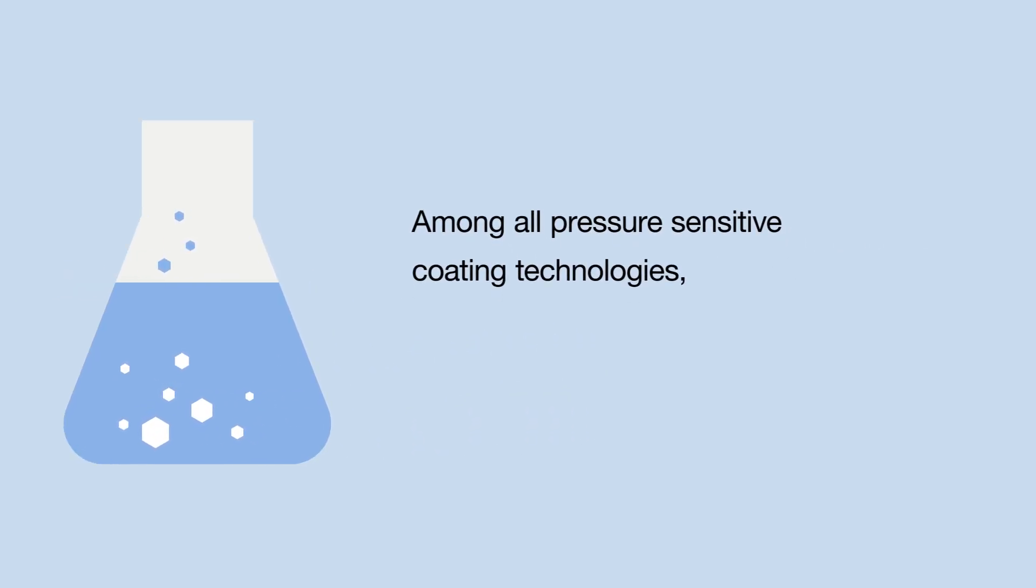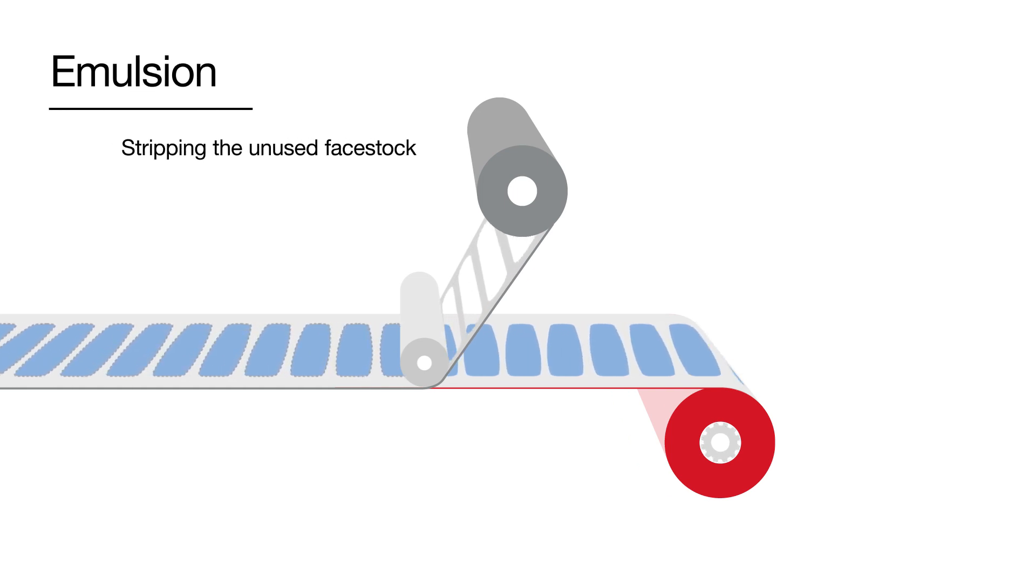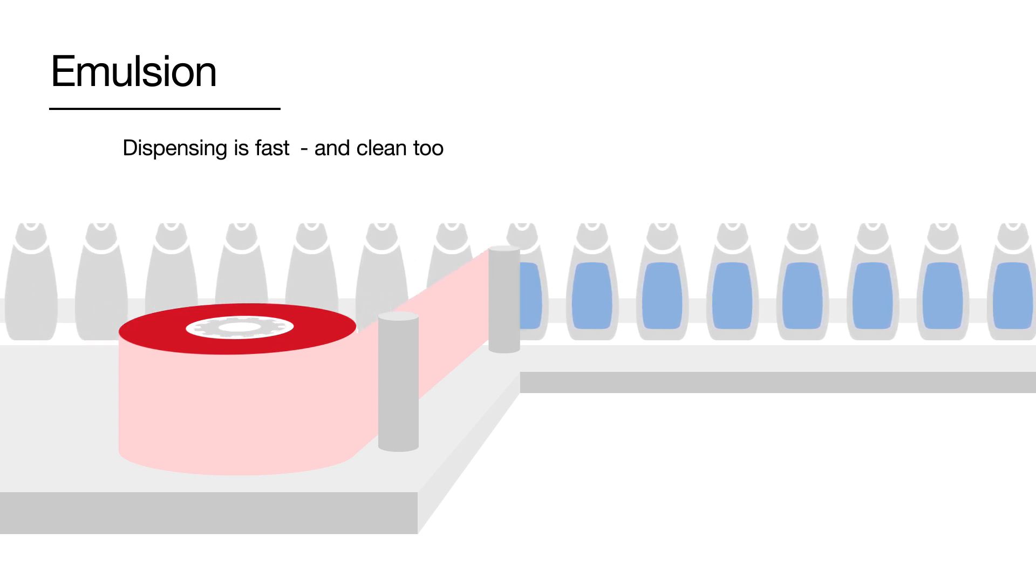Among all pressure-sensitive coating technologies, emulsion adhesives deliver the best converting performance. Stripping the unused face stock, the matrix is fast and easy. Dispensing is fast and clean, too.